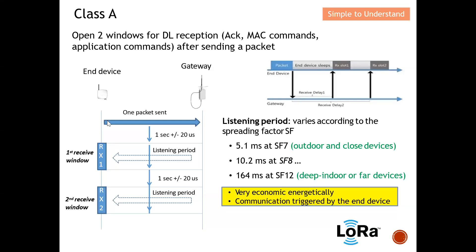Class A has the longest battery life because the end device is sleeping most of the time. It only wakes up to send an uplink message, then opens a short reception window, and goes back to sleep immediately. You can also understand why there is huge latency for the gateway to send a message to the end device — without any uplink, the gateway cannot send to the end device. You cannot predict when the next uplink will be sent, so there is no way to guarantee that the gateway will be able to contact the end device.